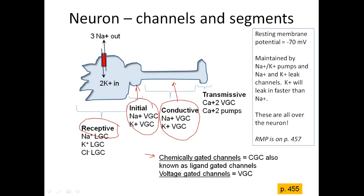The conductive segment is made up of the axon and also has sodium and potassium voltage-gated channels. The transmissive segment is at the synaptic bulb and contains calcium voltage-gated channels and calcium pumps. Those are the four functional segments and the channels found in each specific segment.